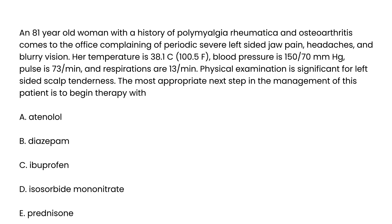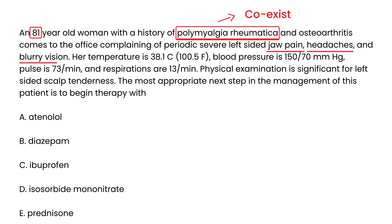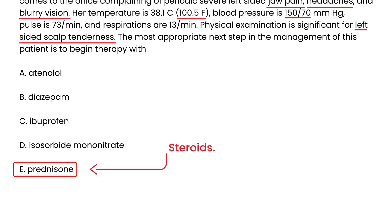An 81-year-old woman with a history of polymyalgia rheumatica — which is important because it can sometimes coexist with temporal arteritis — and osteoarthritis comes to the office complaining of periodic severe left-sided jaw pain, headaches, and blurry vision. Temperature is slightly elevated, blood pressure is 150/70, pulse 73, respirations 13. Physical exam is significant for left-sided scalp tenderness — all classic clues. The most appropriate next step in management is to begin therapy with prednisone.